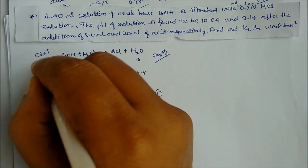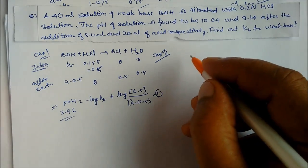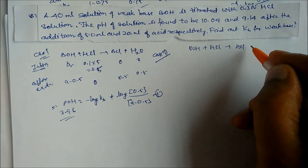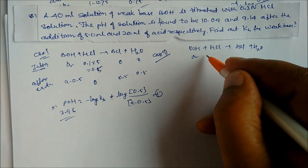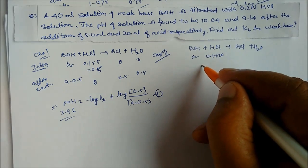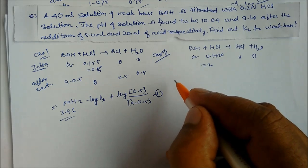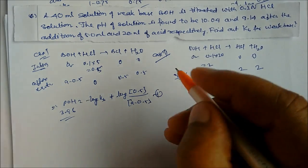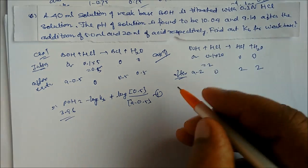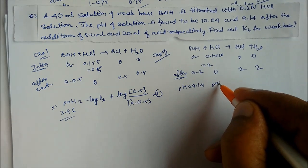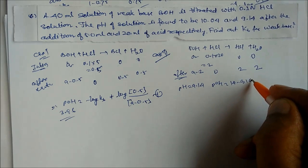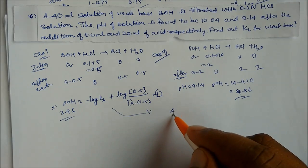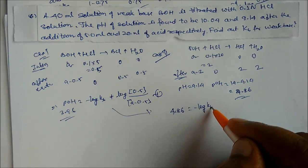After reaction with 20 mL acid: BCl = 2, BOH = a−2. pH = 9.14, so pOH = 14 − 9.14 = 4.86. Henderson equation: 4.86 = −log(Kb) + log(2/(a−2)). This is equation 2.